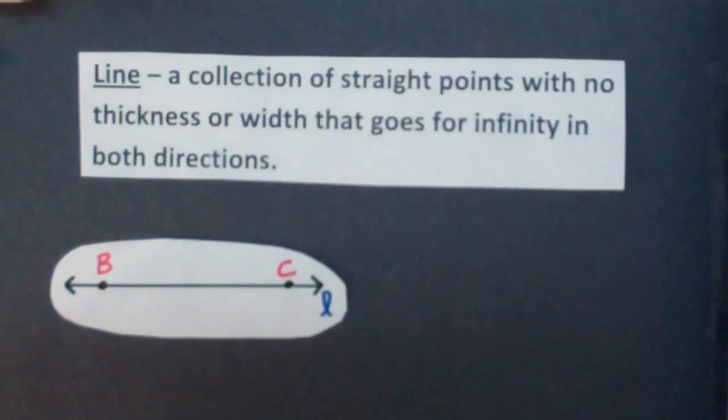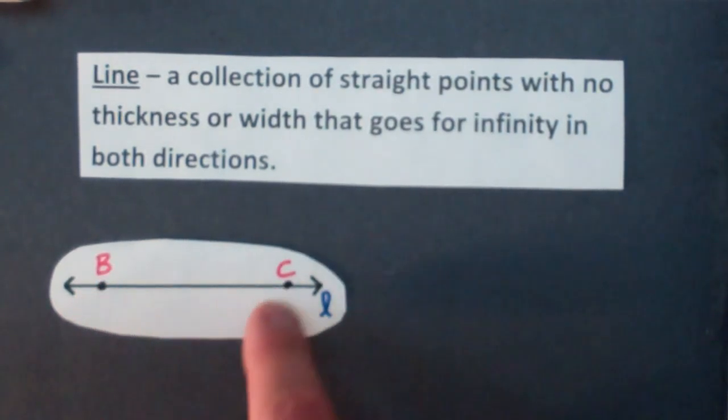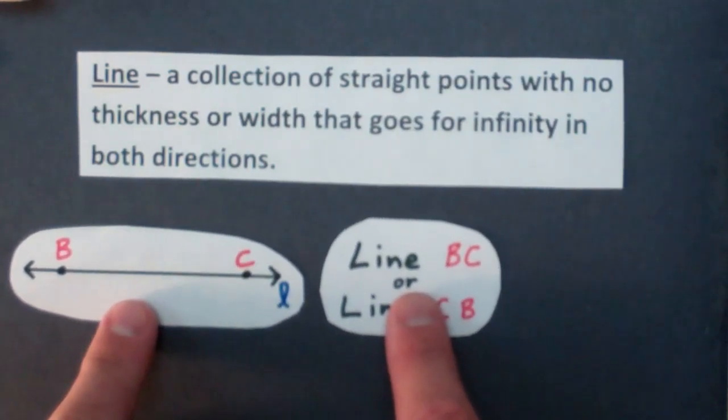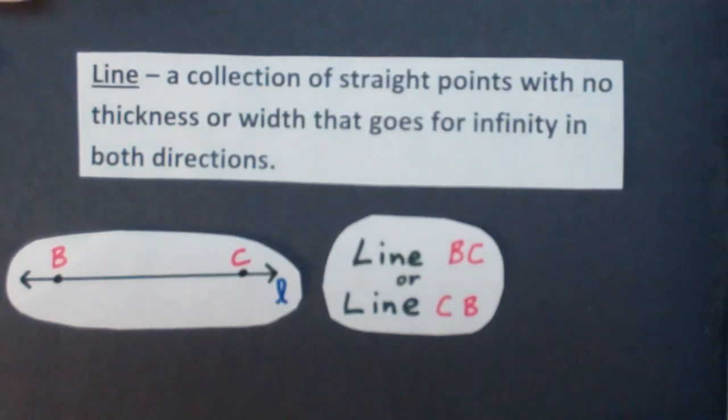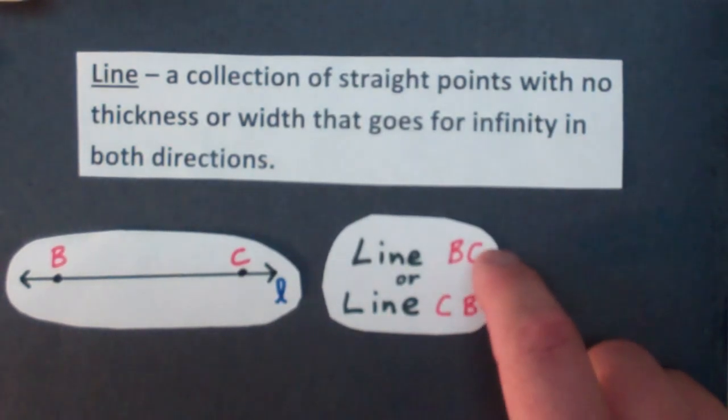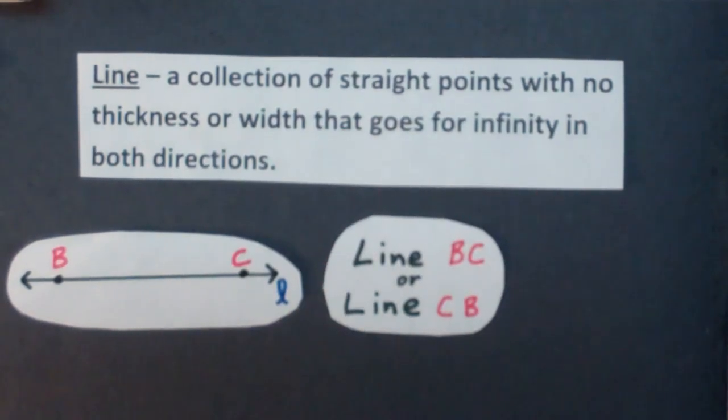Now, if you wanted to name this line here, I picked out two points, point B and point C. You need two points to name a line. So if I had a word problem, you could see it written down as line BC or line CB. Notice it doesn't matter the order those points are in as long as you have two points associated with that.